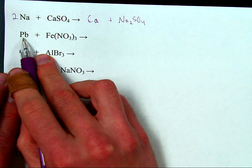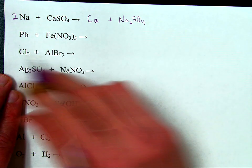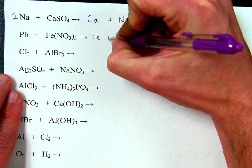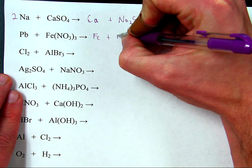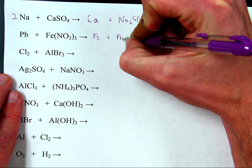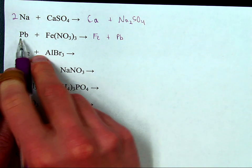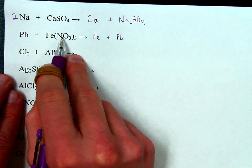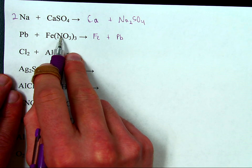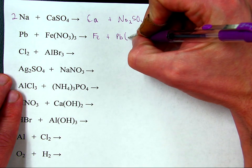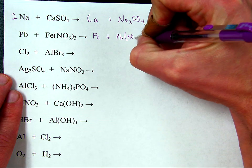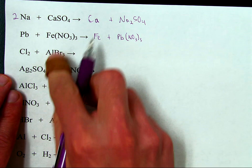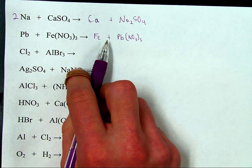Same thing here. Step one: switch the pieces. Positive lead switches places with positive iron. So we get iron plus lead nitrate. Now, lead can take many possible charges — you don't know what it is, so we're going to assume, lacking any further information, that it's going to be the same charge as the iron was.